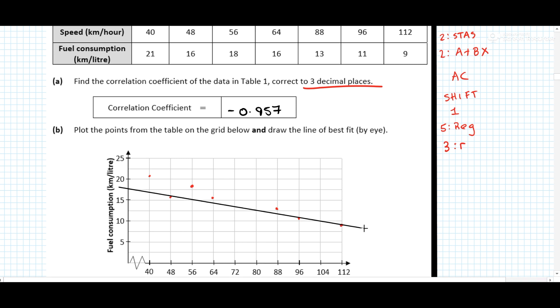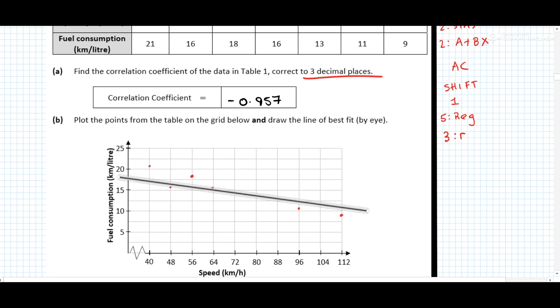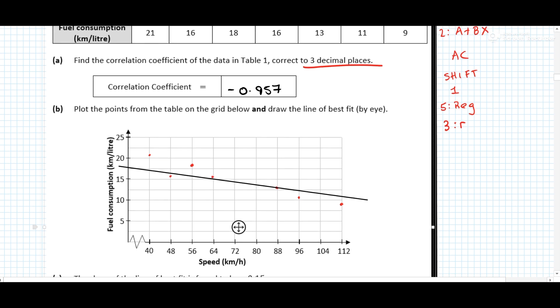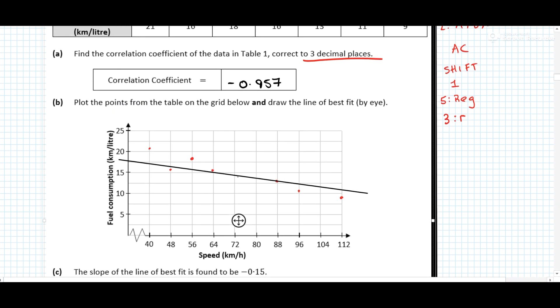And then when you're putting in the line of best fit, you want the same number of points above the line as are below the line. So again, just doing it by eye. Probably a little bit easier on a piece of paper, but I'll do my best. And something like that anyways. And again, nice 0, 2, 4, 5. So you should really be guaranteeing yourself those five marks there.